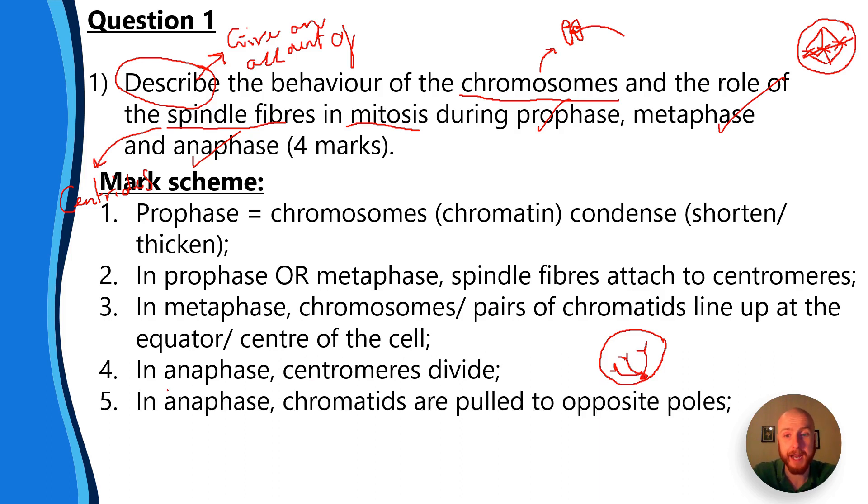Fifth mark is for saying that in anaphase the chromatids are pulled to opposite poles, so kind of what we were talking about before.